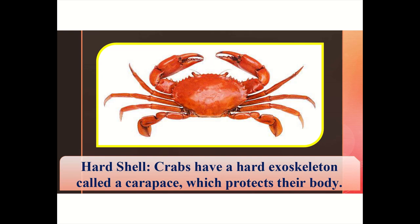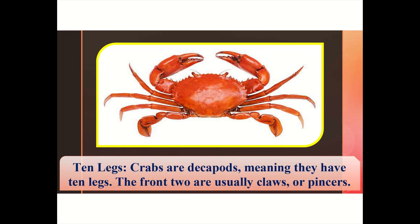Amazing facts about crabs you didn't know. Hard shell: crabs have a hard exoskeleton called the carapace which protects their body. 10 legs: crabs are decapods, meaning they have 10 legs — the front two are usually claws or pincers.